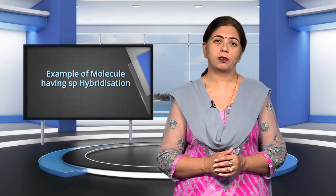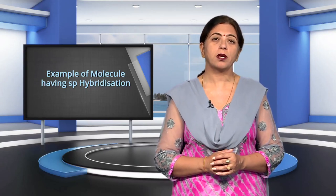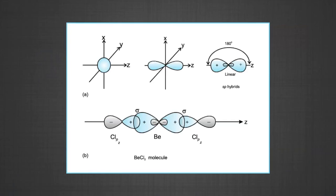The first example of SP hybridization is beryllium chloride (BeCl₂). The ground state electronic configuration of beryllium is 1S² 2S². In the excited state, one of the 2S electrons is promoted to a vacant 2P orbital to account for its bivalency. One 2S and one 2P orbital hybridize to form two SP hybridized orbitals, oriented in opposite directions at an angle of 180°. Each SP hybridized orbital overlaps with the 2P orbital of chlorine axially to form two Be–Cl sigma bonds, giving beryllium chloride a linear geometry.